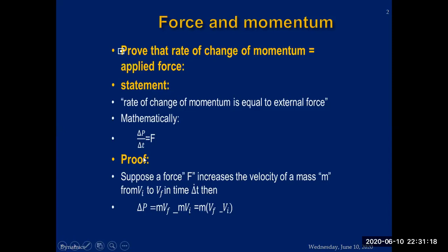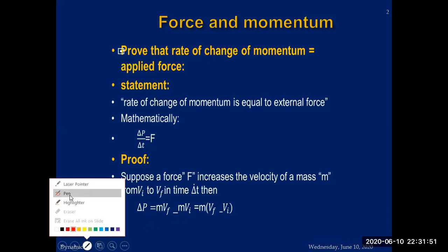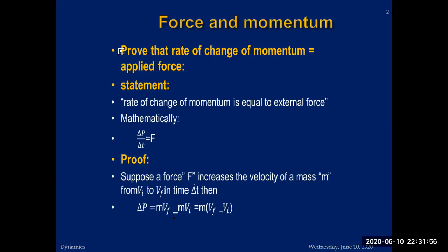Suppose a force F increases the velocity of a body of mass m from vi to vf in time interval Δt. We calculate the change in momentum: momentum is P = mv, so the change in momentum is mvf minus mvi. Taking mass as common, the change in momentum becomes m(vf − vi).